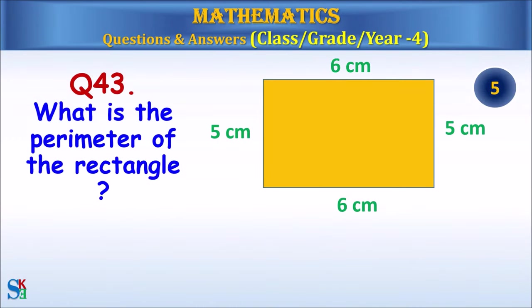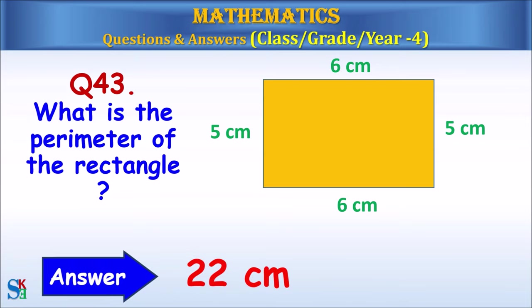Question 43: What is the perimeter of this rectangle? The answer is 22 centimeters.